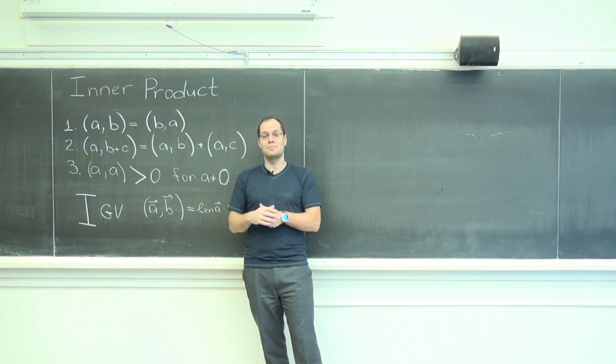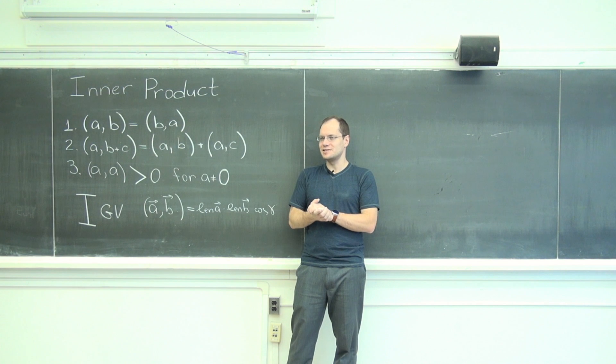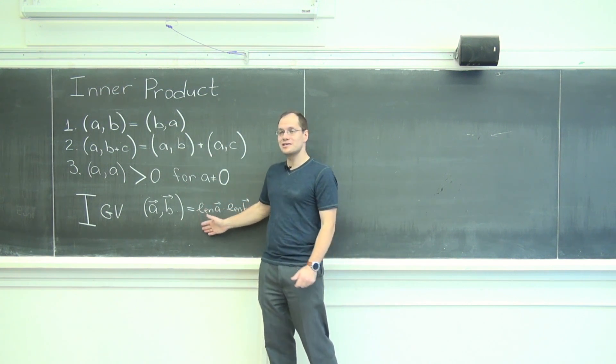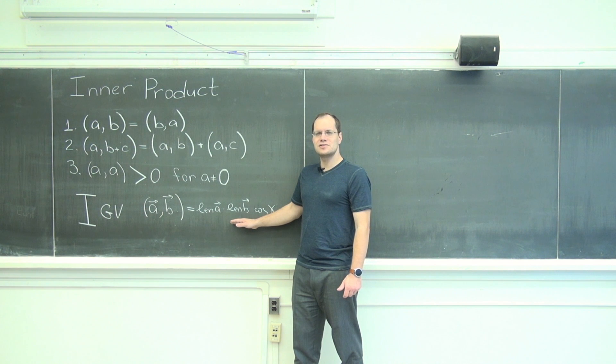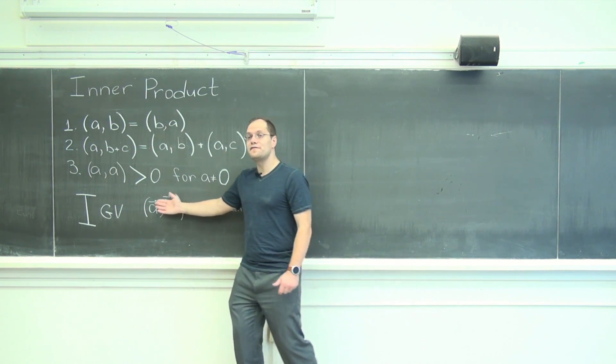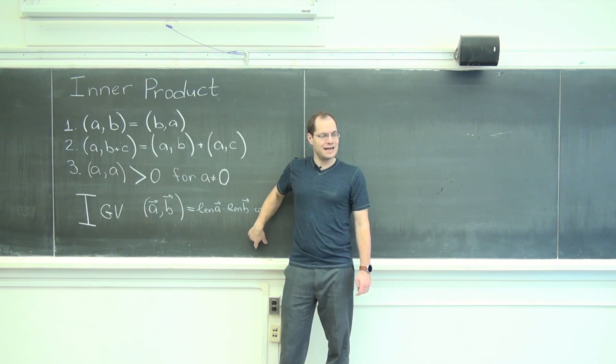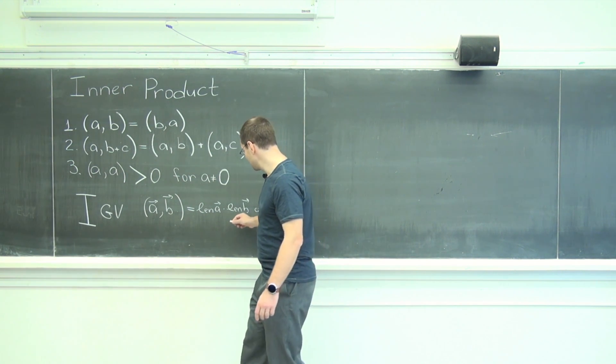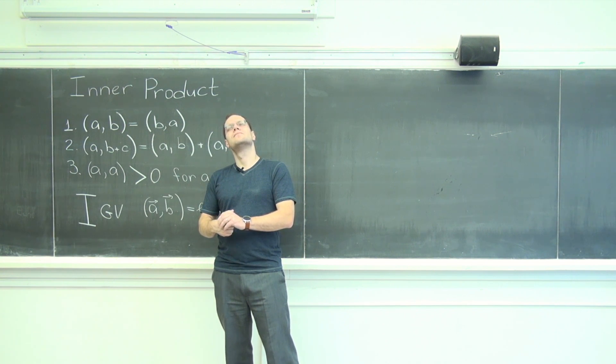And if you measure length through the inner product, right, square root of the inner product with itself, well, you'll get back the same length and it's consistent. But if you used a totally different inner product, if you got really creative and you said something like, reflect one of the vectors and then evaluate this, that would actually be a pretty good one.